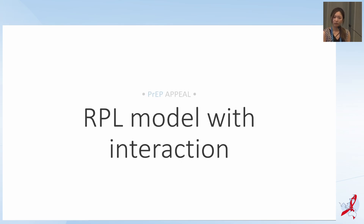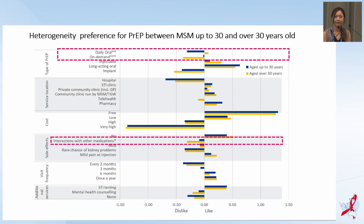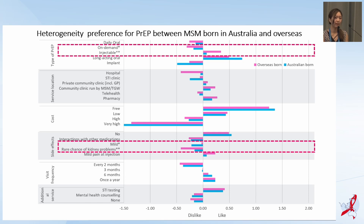Here are the results from the random parameter logit model with interactions. When comparing preferences between MSM aged up to 30 and over 30 years old, older MSM prefer daily oral PrEP and dislike PrEP with interactions with other medications as a side effect. When comparing Australian-born and overseas-born MSM, overseas-born MSM prefer injectable PrEP and dislike kidney problems as a side effect of PrEP.